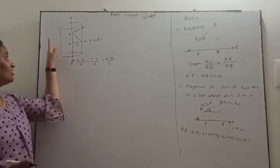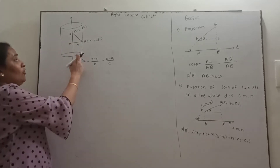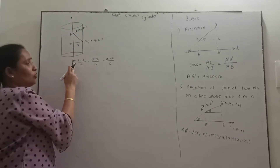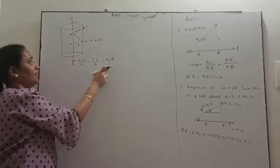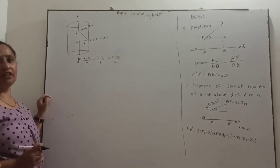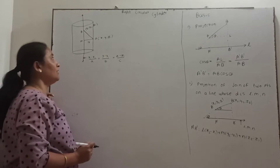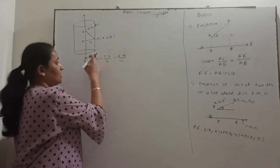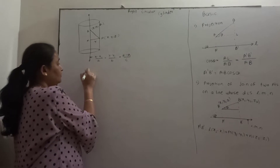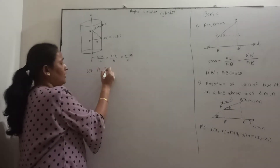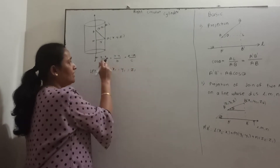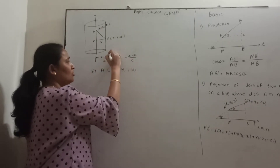The right circular cylinder is the surface generated by a straight line which is always parallel to a fixed straight line. This fixed straight line is known as the axis of the cylinder, and the moving line is known as the generating line. While finding the equation of a right circular cylinder, from the equation of the axis we will get the coordinates of any point on the axis. Point A has coordinates x₁, y₁, z₁, which we get from the symmetrical form equation of the line.